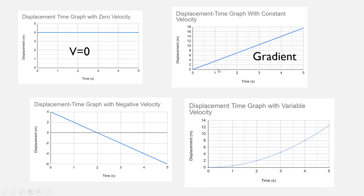And that will give us the velocity. And in fact, we could take any two points on this line and find the gradient. And it would give us the same answer because the velocity is constant, meaning that it doesn't change.